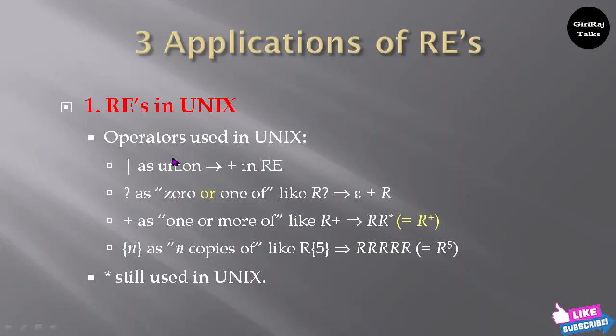Operators used in Unix. Pipe operator as union, which you can write as plus in regular expression. Question mark, which you can represent as zero or one of, like R? which you can write as epsilon plus R. And plus as one or more of, like R+. You can represent R+ as RR*.